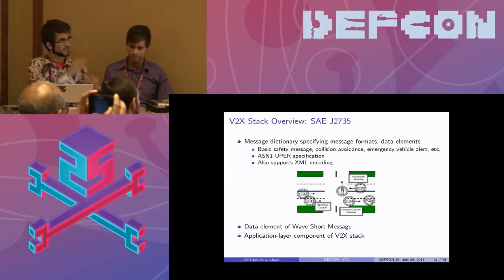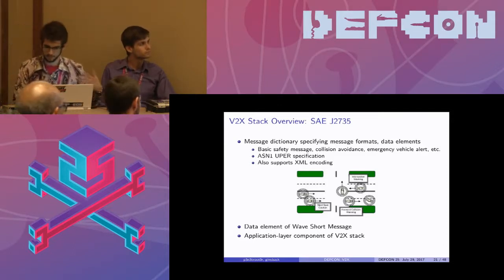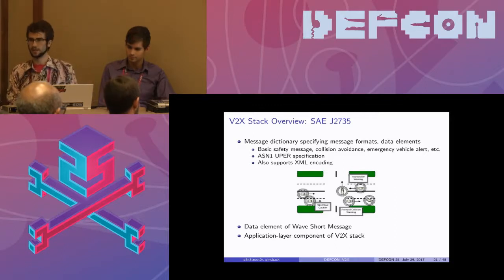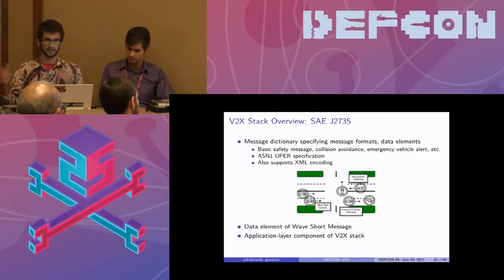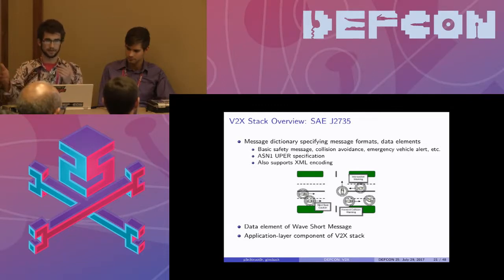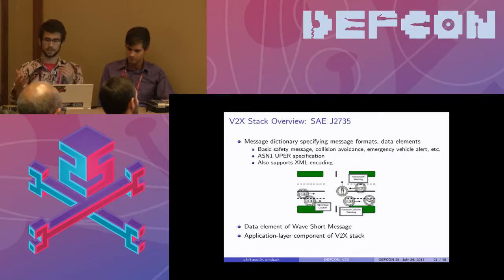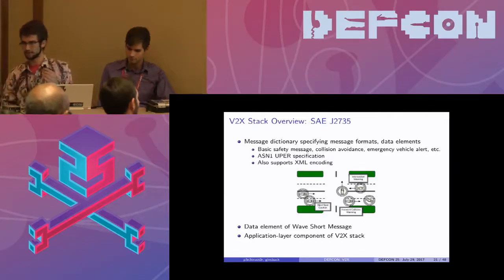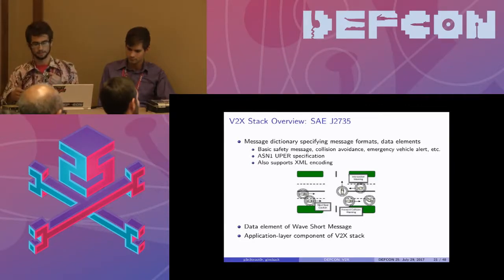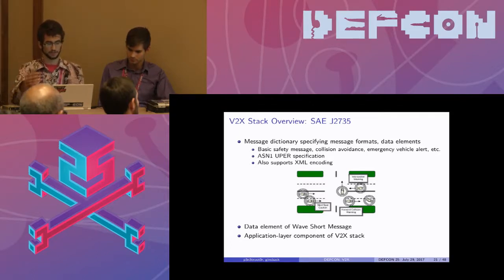J2735 is the application layer grammar message dictionary that specifies the safety messages used in interoperable V2V systems. The basic safety message is the one that has been most developed so far — messages continuously transmitted at periodic intervals between all members of the VAnet, including state information like dimensionality, heading, and location of the car, such that you can perform behavioral optimization and dispatch reactionary actions to the vehicle bus to augment behavior.